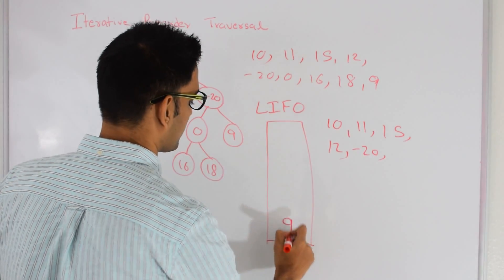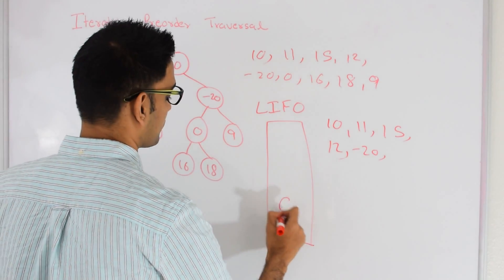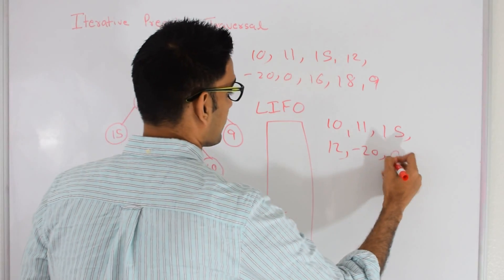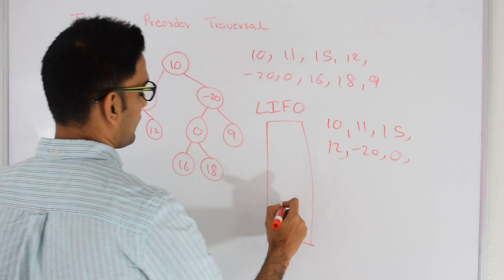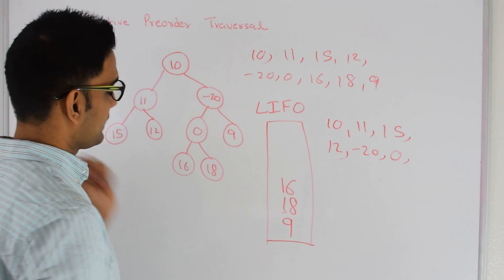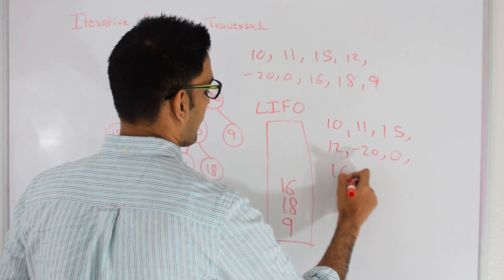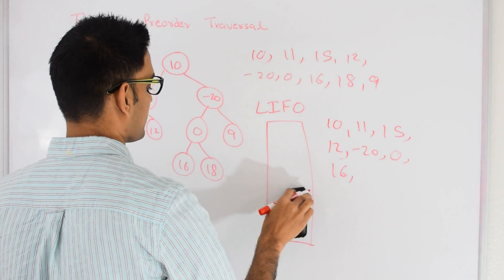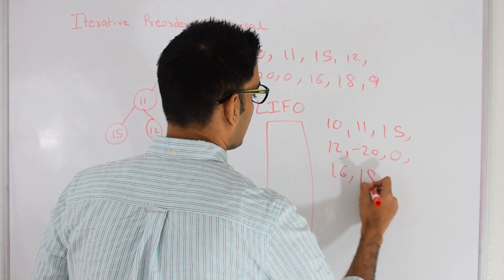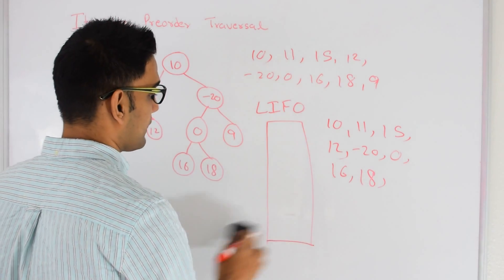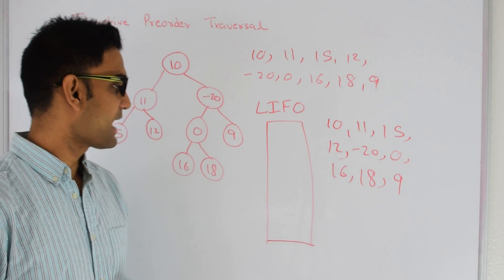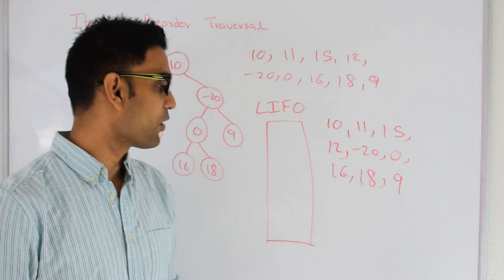So we go to the stack and pop out minus 20. Minus 20 has a right child, so 9 goes in first, and then it has a left child so 0 goes in. Now we pop out 0 and print 0. 0 has a right child 18 and a left child 16, so we push them into the stack. 16 comes out, we print 16 — it doesn't have right or left child. So we pop out 18, which also has no children. Then we pop out 9, which has no children. Now the stack is empty, so we break out of the while loop. This is my pre-order traversal.